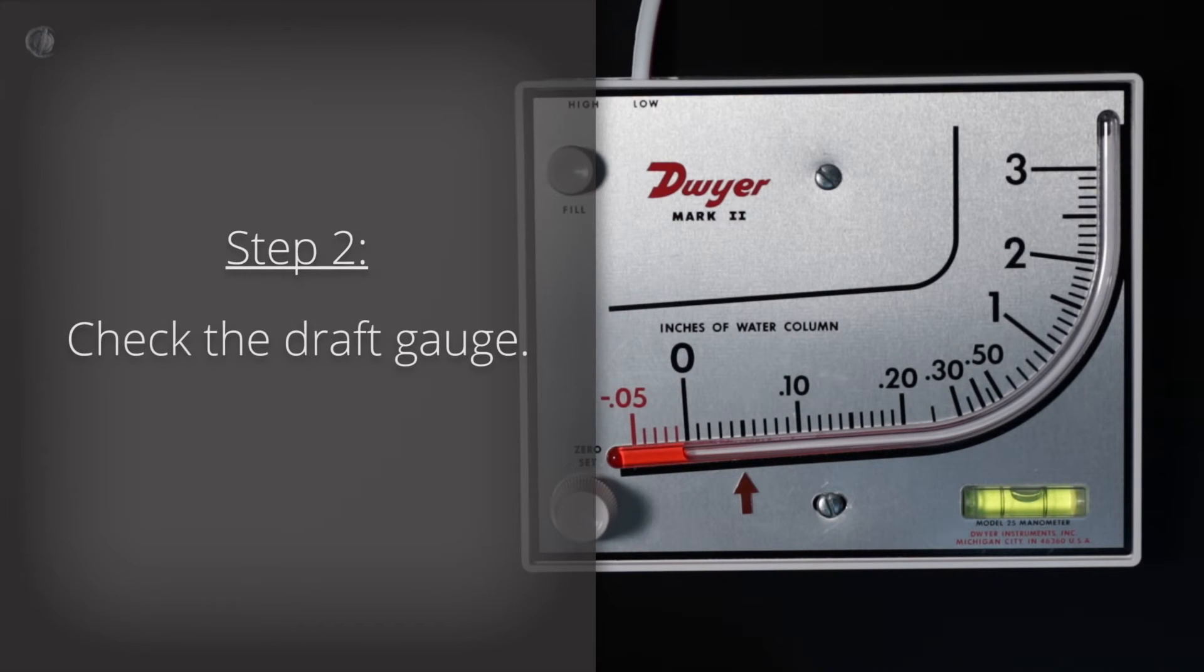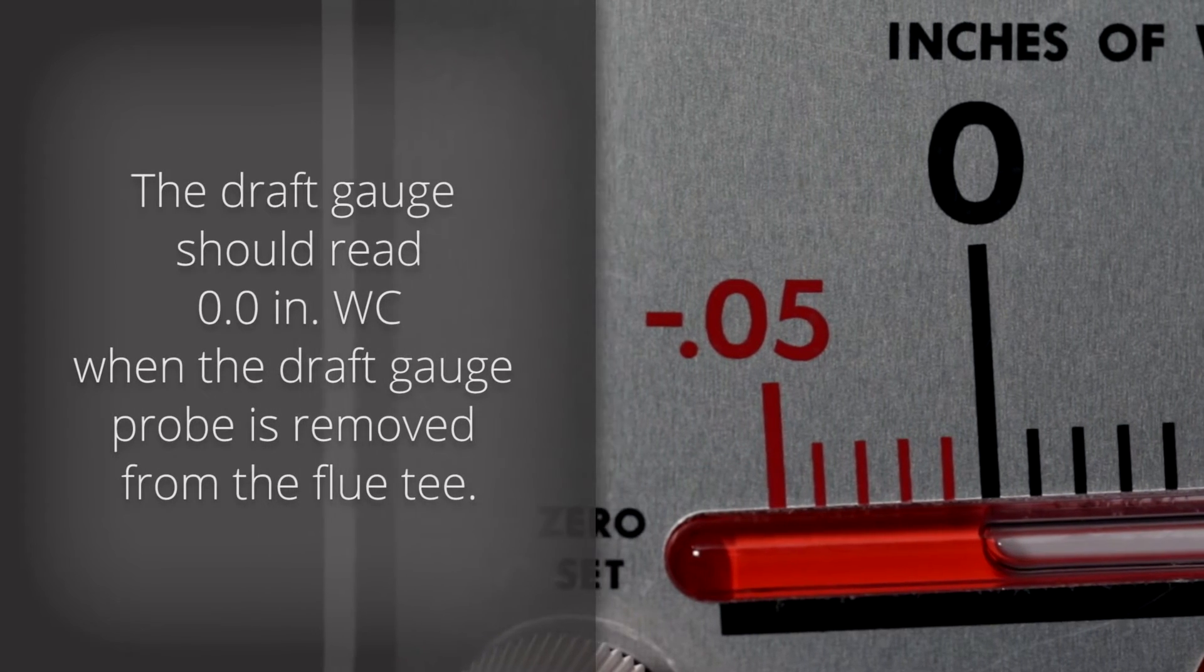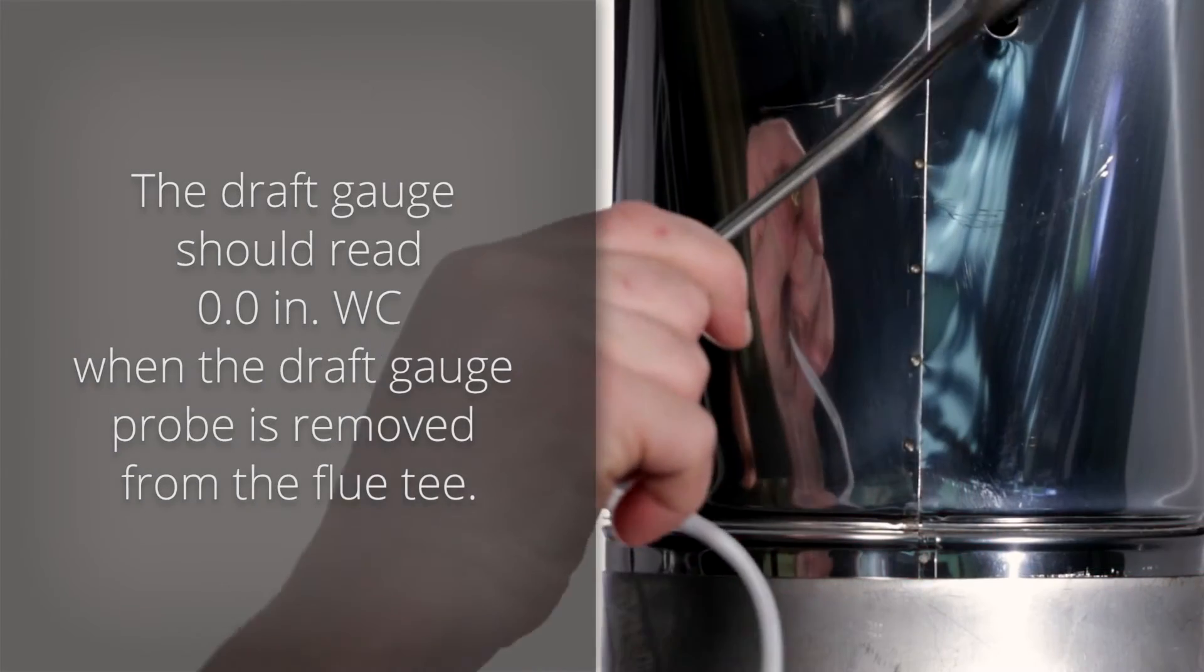Step 2. Check the draft gauge. Note that the draft gauge should read 0.0 inches of water column when the draft gauge probe is removed from the flue tee.